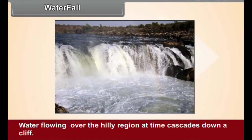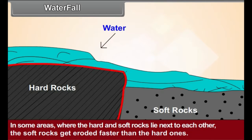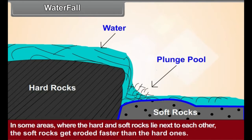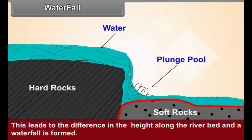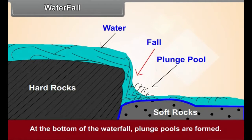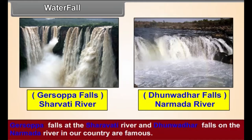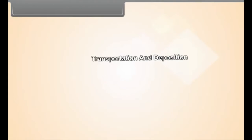Waterfall: Water flowing over a hilly region at times cascades down a cliff. This gives rise to the formation of a waterfall. In some areas, where the hard and soft rocks lie next to each other, the soft rocks get eroded faster than the hard ones. This leads to a difference in height along the river bed and a waterfall is formed. At the bottom of the waterfall, plunge pools are formed. Garsoppa Falls on the Sharavati River and Dhuandhar Falls on the Narmada River in our country are famous.